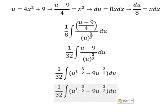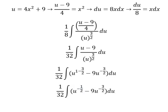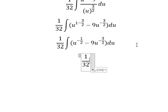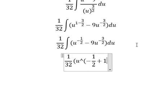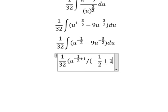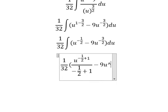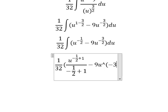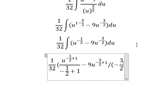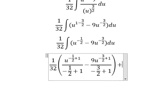1 minus 3 over 2 gives us negative 1 over 2. Now the integration of u to the power of negative 1 over 2 gives us u to the power of negative 1 over 2 plus 1, divided by negative 1 over 2 plus 1, and we add the constant C.